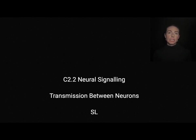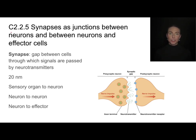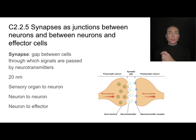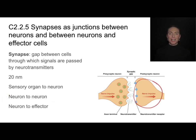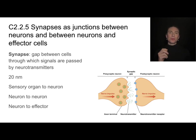This video covers standard level content from C2.2 on neural signaling and we're going to look at transmission between neurons. This is often referred to as synaptic transmission, referring to the synapse — a gap between two cells in which neurotransmitters serve as messenger molecules. It can be between a neuron and a neuron, a neuron and an effector organ like a muscle, or a neuron and a sensory organ. Anytime we're connecting a neuron to something, it passes a message across the synapse in the form of a neurotransmitter.